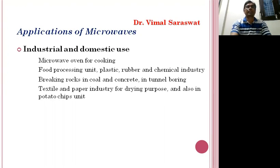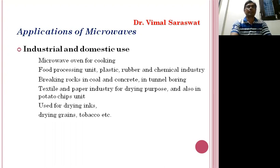Microwaves are used in the textile and paper industry for drying clothes and papers, and they are also used in potato chip units for drying potato chips. Microwaves are also used for drying grains, tobacco, and similar materials.